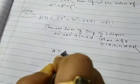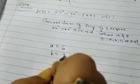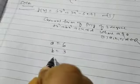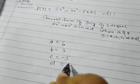So, a is equal to six. B is equal to three. C is equal to minus five. And d is equal to one.